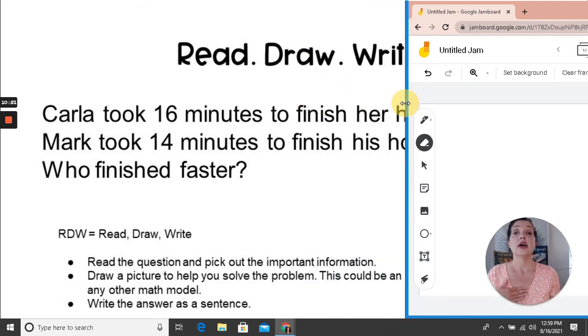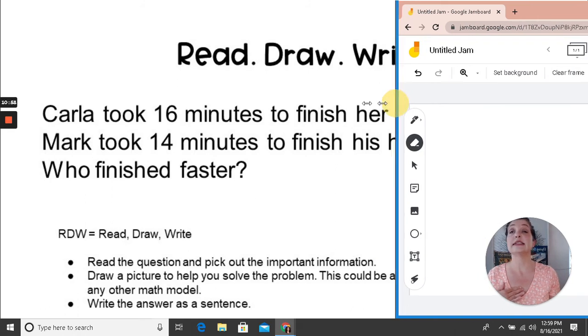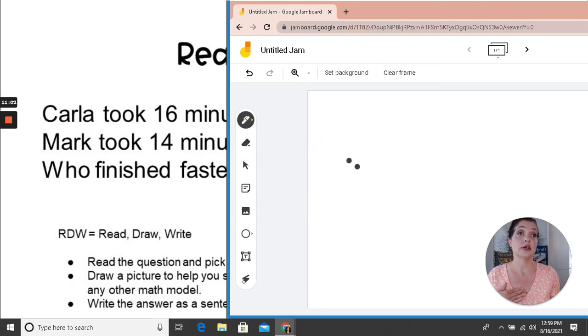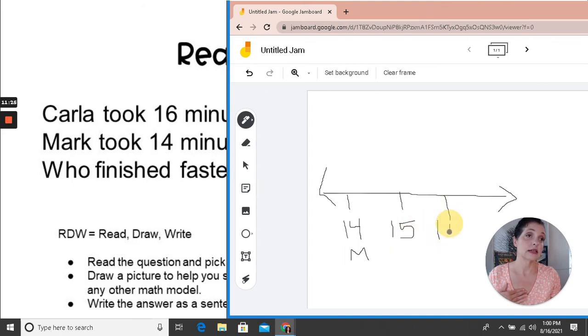But we'll do this together. So we want to draw a number line that starts with 14 minutes for Mark and goes up to 16 minutes for Carla. So I'll just grab my pen tool and I'll draw two arrows. Starting with 14 for Mark. 15 comes after 14. 16 comes after 15. And so this is where I'm stopping because this is Carla's time. Now to find out how much faster Mark was than Carla, I'm going to count the jumps between the tick marks.